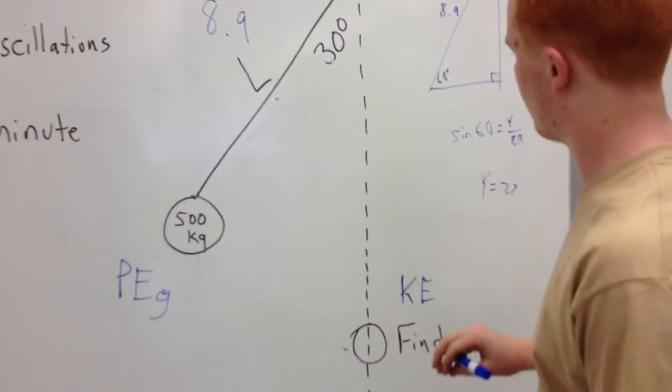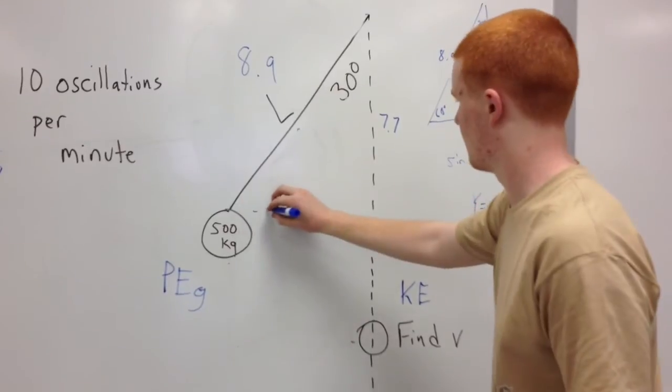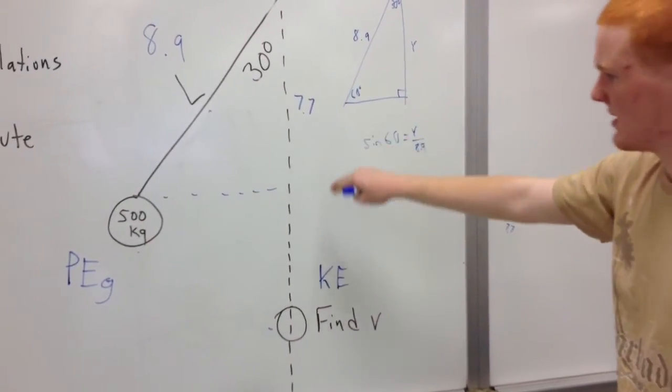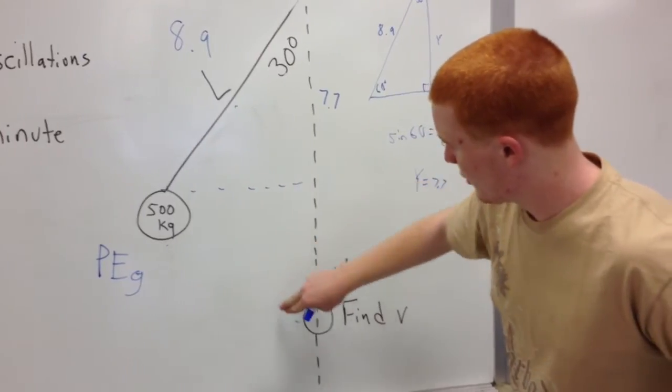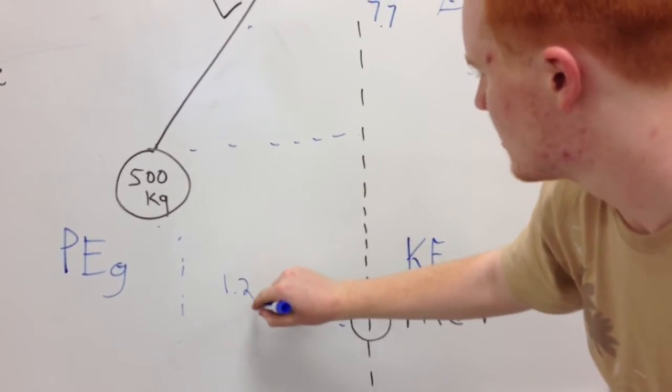So basically what we find is that with this being 7.7, we can subtract these to find a difference between these two spaces of 1.2.